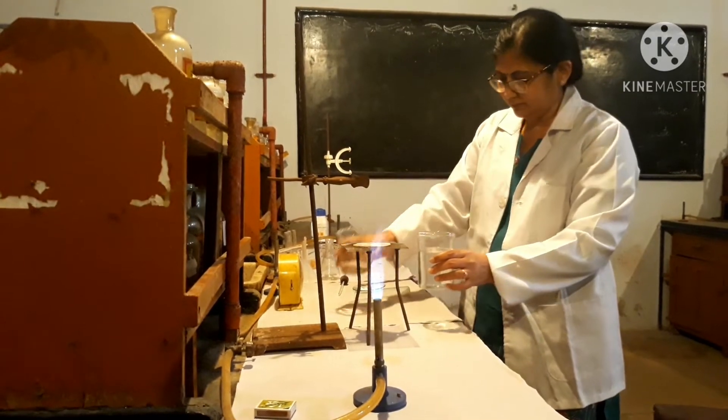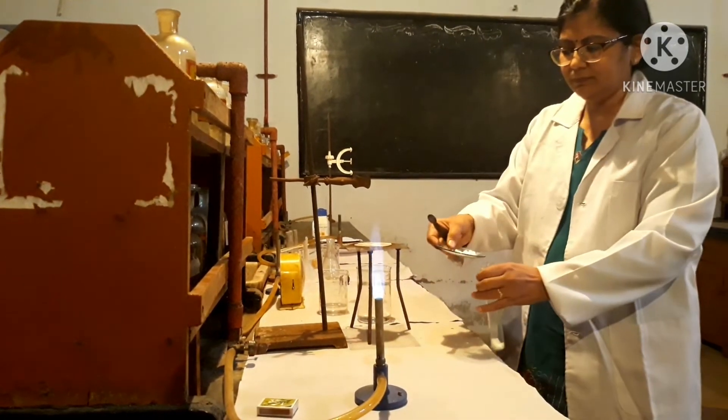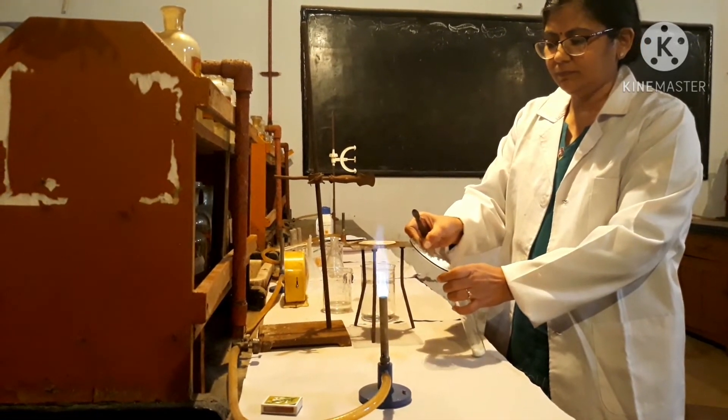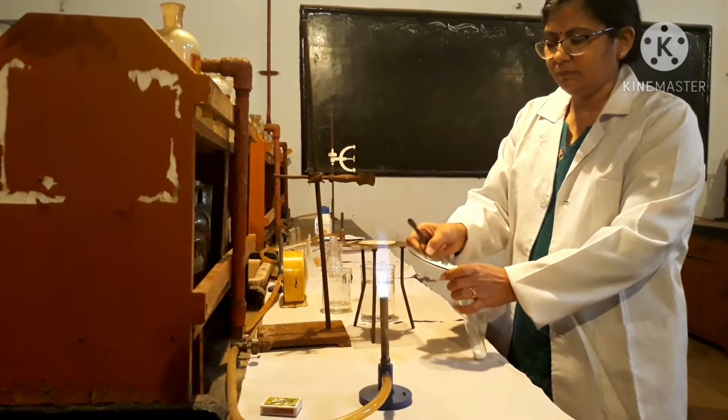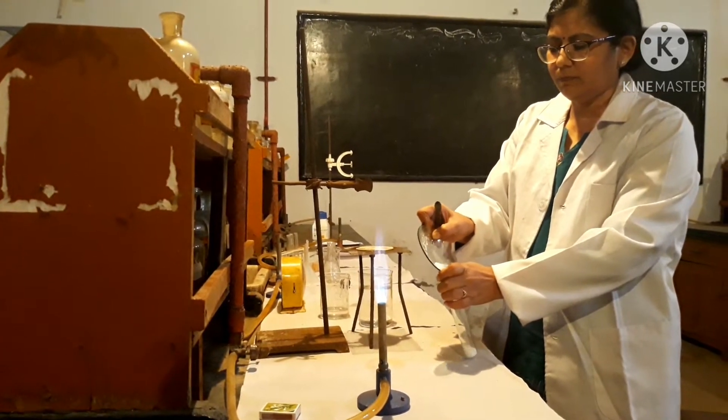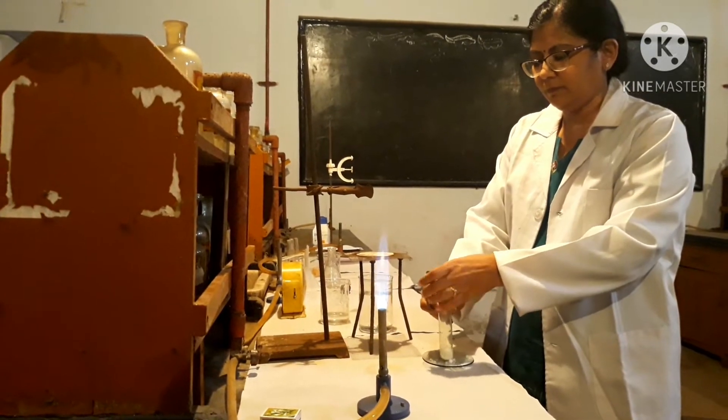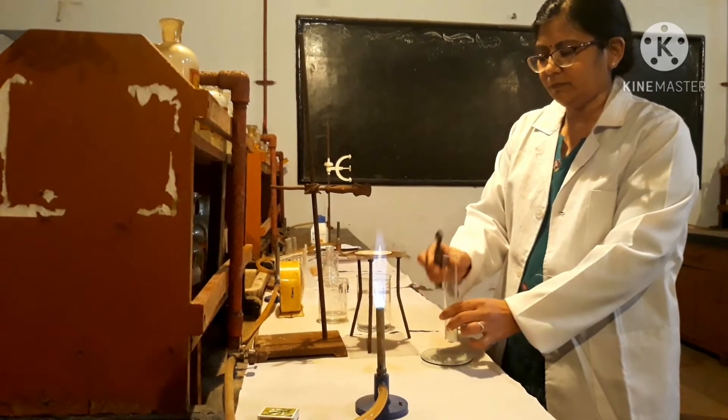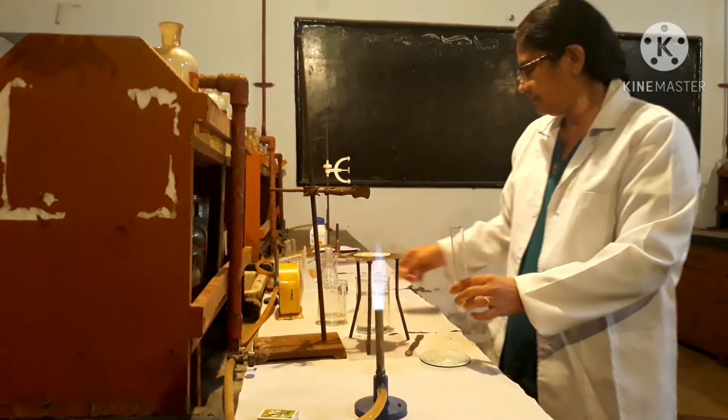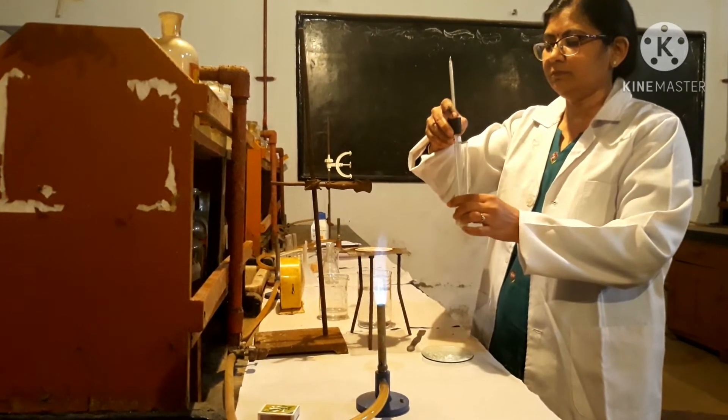Fill the boiling tube with 50 g of strontium chloride salt. Clamp the boiling tube in beaker gently.